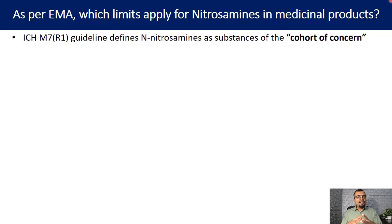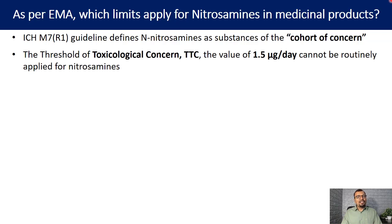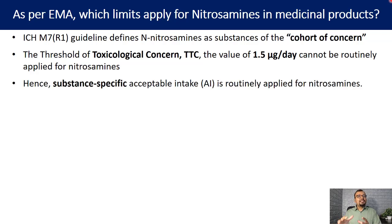The first important point is that all nitrosamines are described as the cohort of concern under ICH guideline M7R1, which talks about DNA-reactive substances. Hence, as nitrosamines are a cohort of concern, one cannot apply the threshold of toxicological concern limit, which is 1.5 micrograms per day. Therefore, a substance-specific acceptable intake must be calculated for nitrosamines.